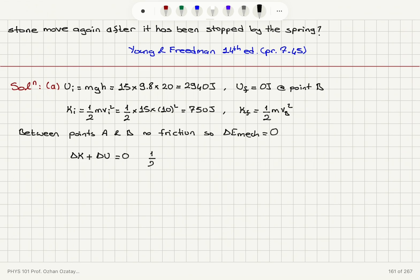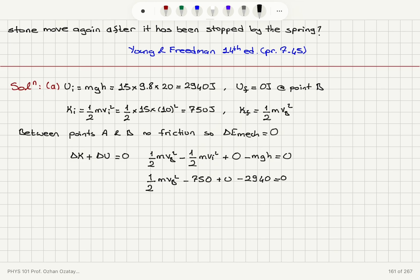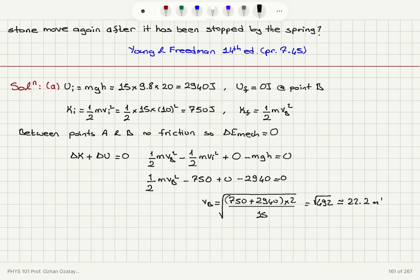The change in kinetic energy is one half mvB squared minus one half mv-initial squared. Final potential energy is zero, initial potential energy is mgh. So we find: one half mvB squared minus 750 joules plus zero minus 2940 joules equals zero. We obtain vB equals the square root of (750 plus 2940) times 2 divided by 15 kilograms, which gives us the square root of 492, equal to 22.2 meters per second.